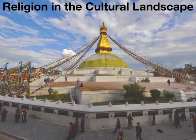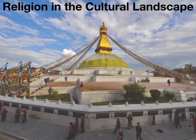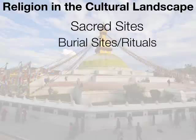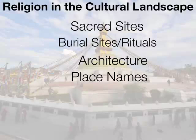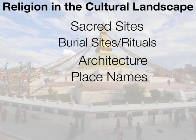Welcome to the lecture on Religion in the Cultural Landscape. This is for AP Human Geography, Chapter 7, the chapter on religion. This entire lecture is focused on how religion is seen in the cultural landscape and the type of impact religion has on it. There are four aspects we're going to examine: sacred sites, burial sites and rituals, architecture, and place names.